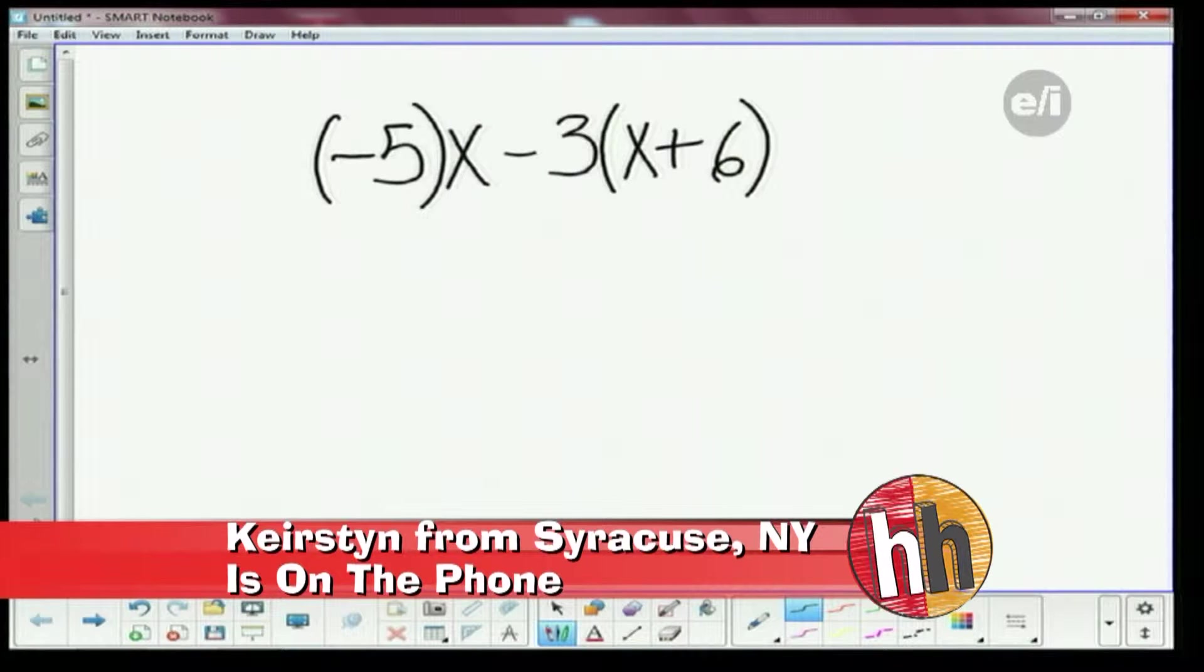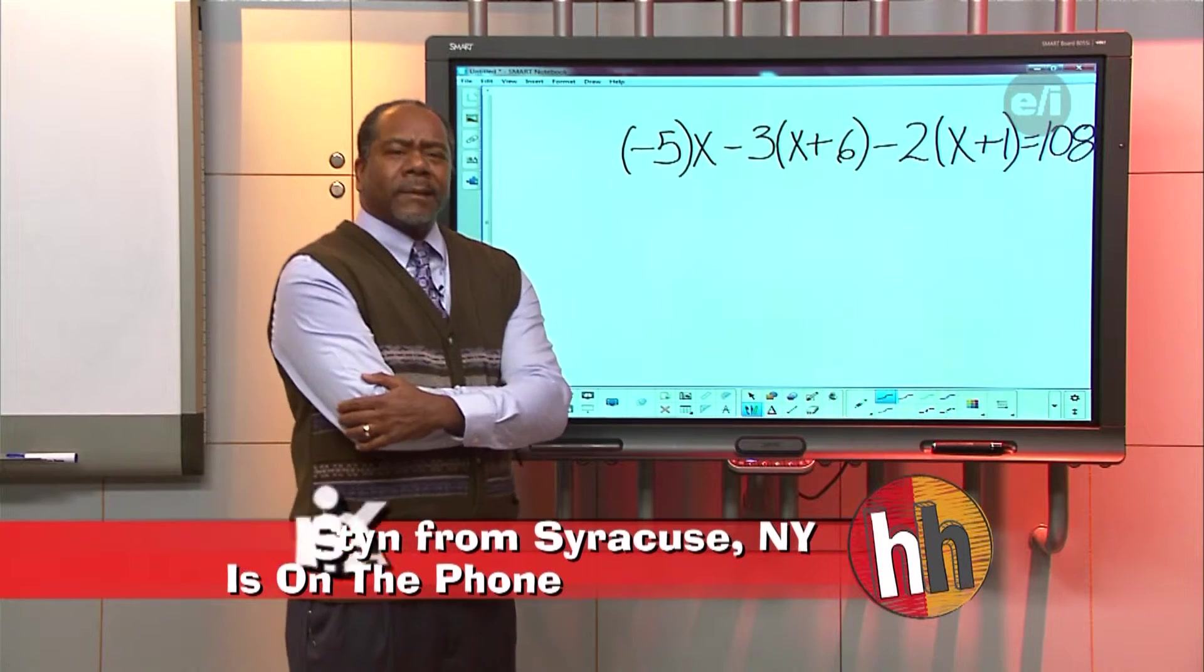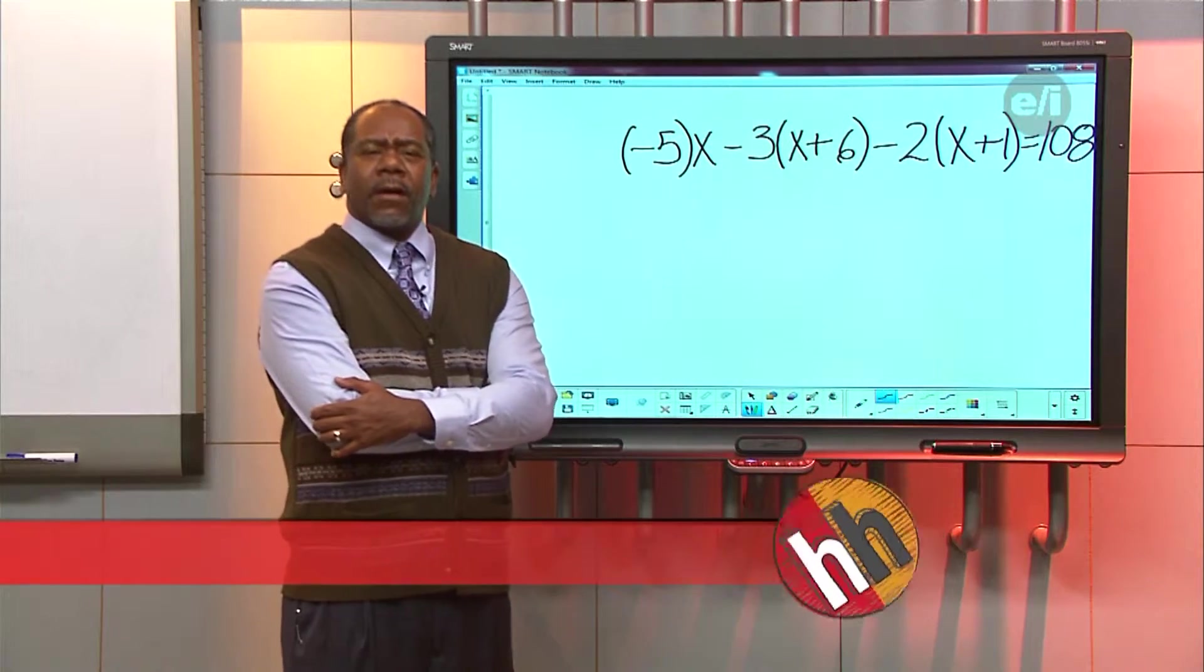Minus 2 parentheses X plus 1, closed parenthesis. Okay. Equals 108. Wow. That's pretty long. I almost ran out of space there. So, what do you think? How do we start off with this problem?